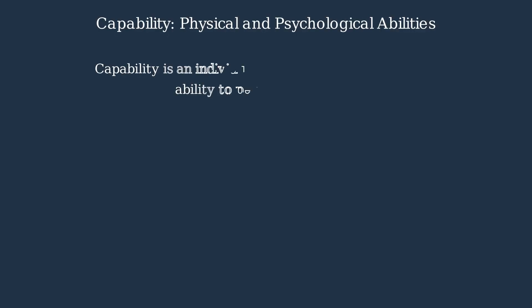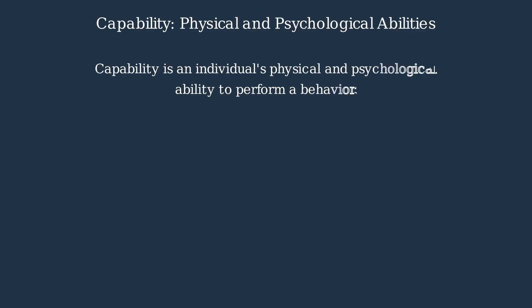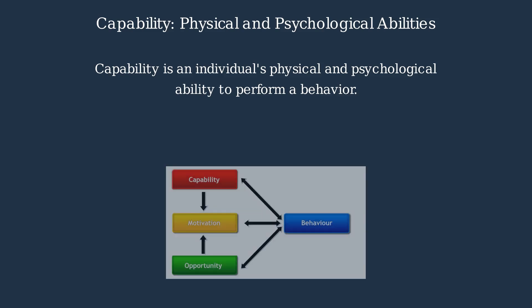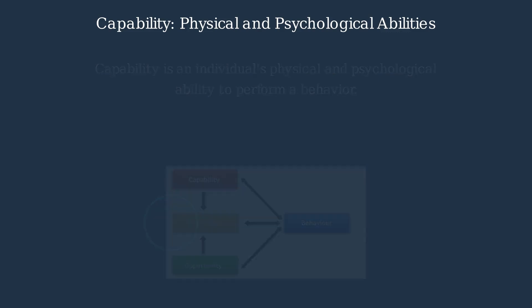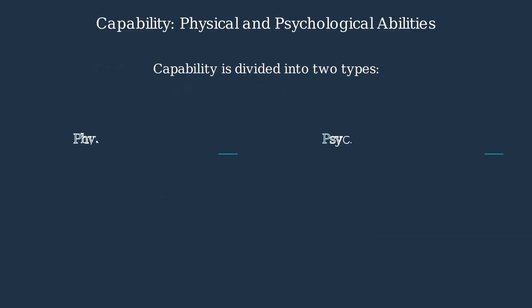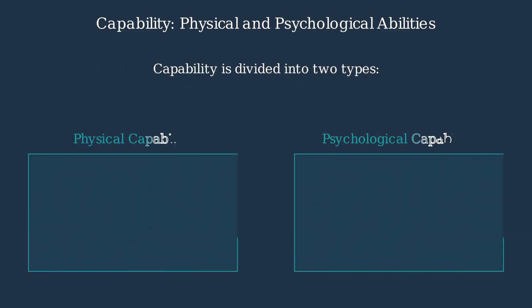Capability is a key component of the COM-B model for behavior change. In the COM-B model, capability works alongside motivation and opportunity to influence behavior. Capability is divided into two distinct types: physical capability and psychological capability.